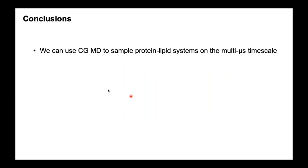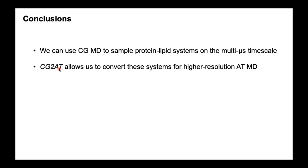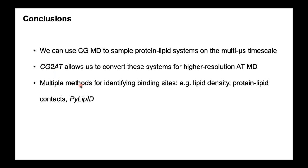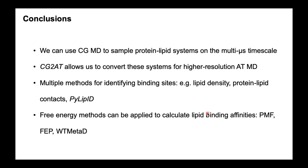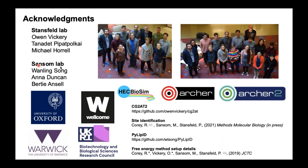To conclude: we can use coarse-grained MD to sample protein-lipid systems on a microsecond timescale. We can convert these systems to atomistic for high-resolution simulations using programs such as CG2AT. There are multiple ways of identifying binding sites from our simulation data, including the pilipid Python package. And we can use free energy methods to calculate the affinities of these interactions. Thanks to everyone in the labs, particularly Owen Vickery, who did a lot of work with free energy calculations and also wrote the CG2AT program, and Wenling Song, who wrote the pilipid program. Thanks to our funders, the organisers, and to you for listening.